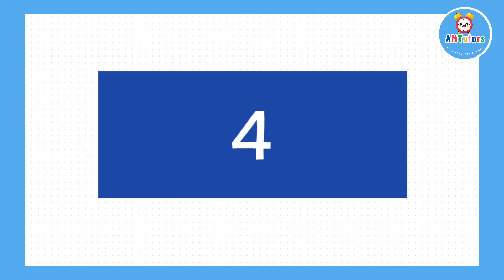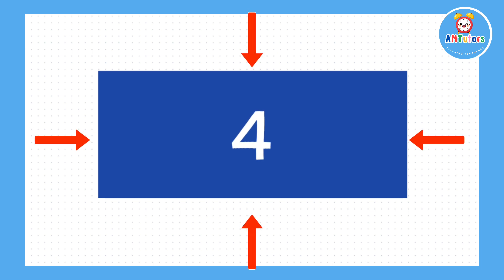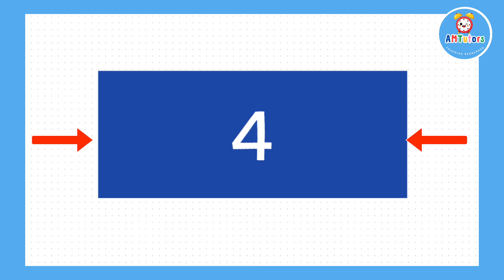Next up we have a rectangle. A rectangle also has four sides but this time only the opposite sides are equal. So two sides are longer and two sides are shorter.